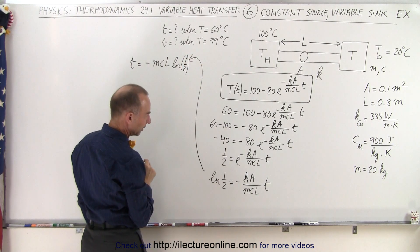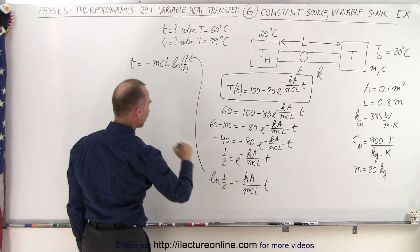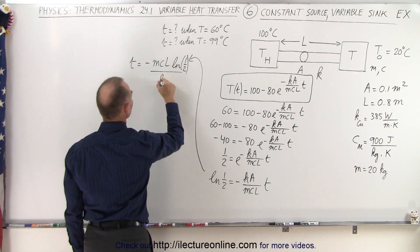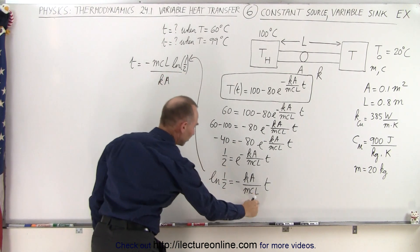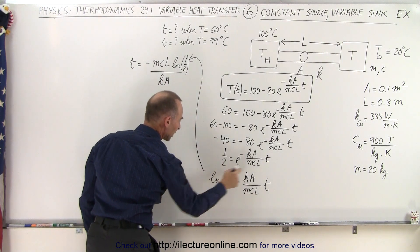So the time is going to be equal to minus MCL times the natural log of one half, divided by K times A. So we have the MCL come up here, the negative come up here, divided by KA.